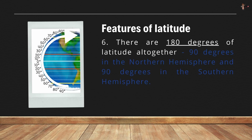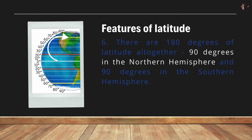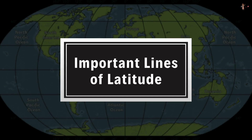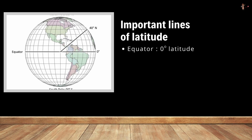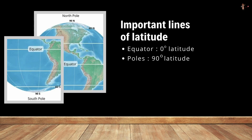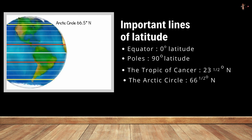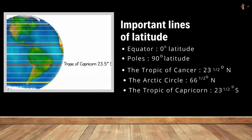There are 180 degrees of latitude altogether — 90 degrees in the northern hemisphere and 90 degrees in the southern hemisphere. Other than the equator and the poles, there are four other important parallels: the Tropic of Cancer at 23 and a half degrees north, the Arctic Circle at 66 and a half degrees north, the Tropic of Capricorn at 23 and a half degrees south, and the Antarctic Circle at 66 and a half degrees south.